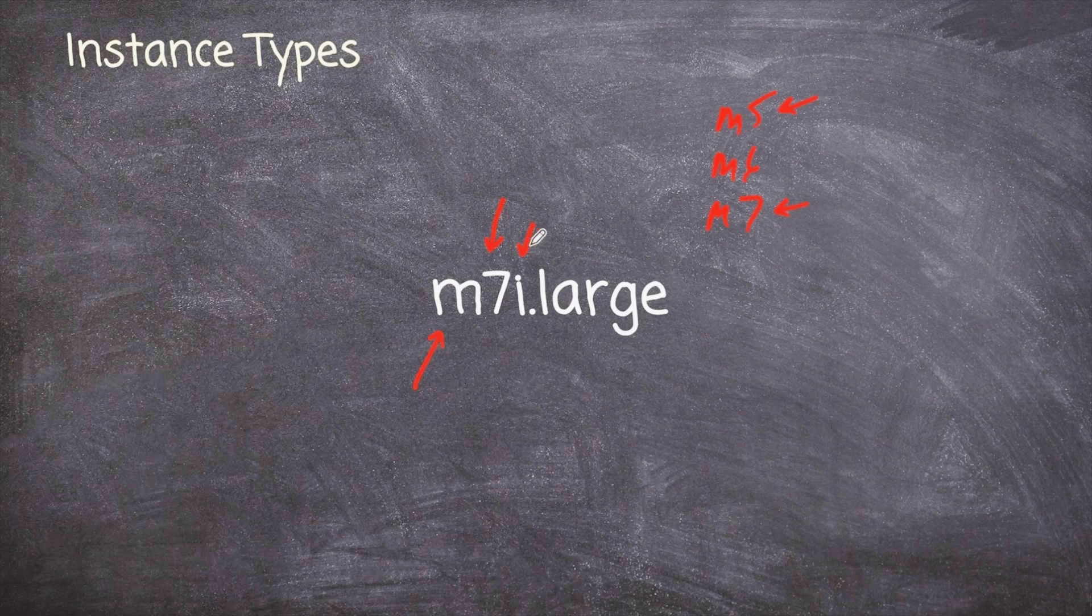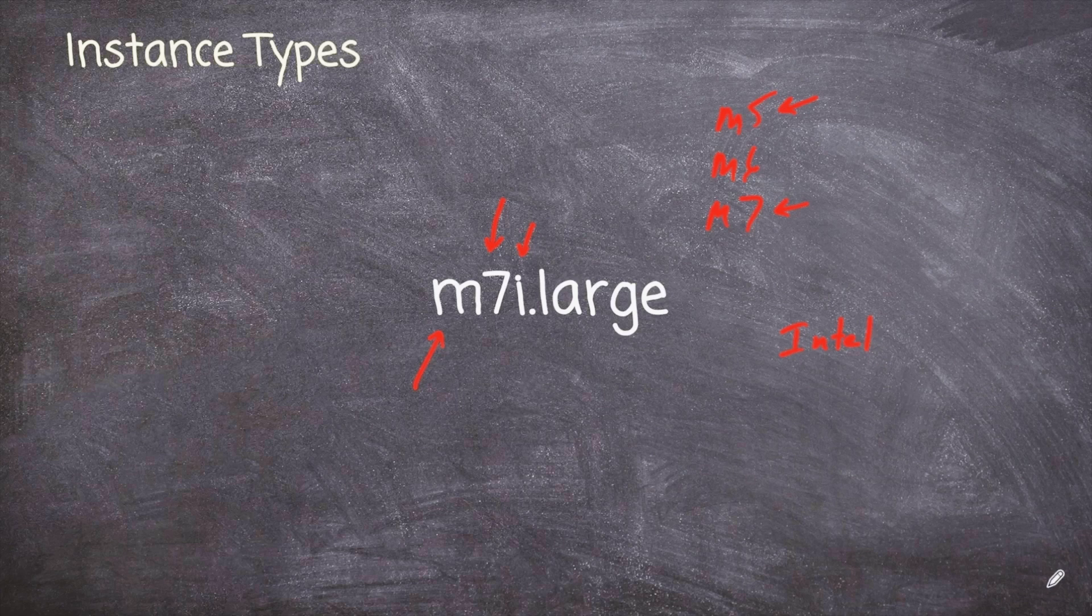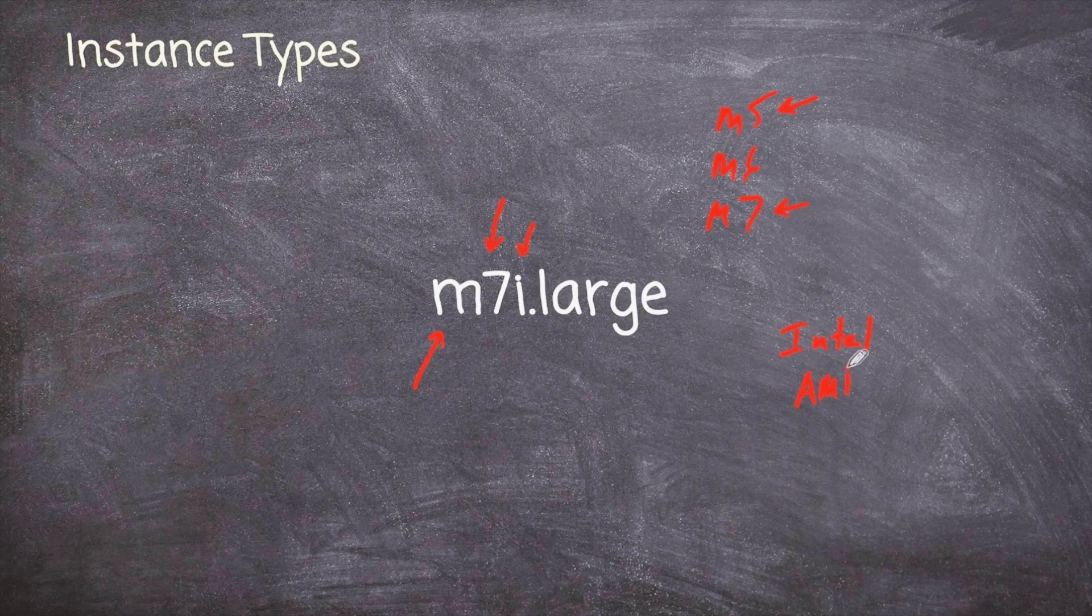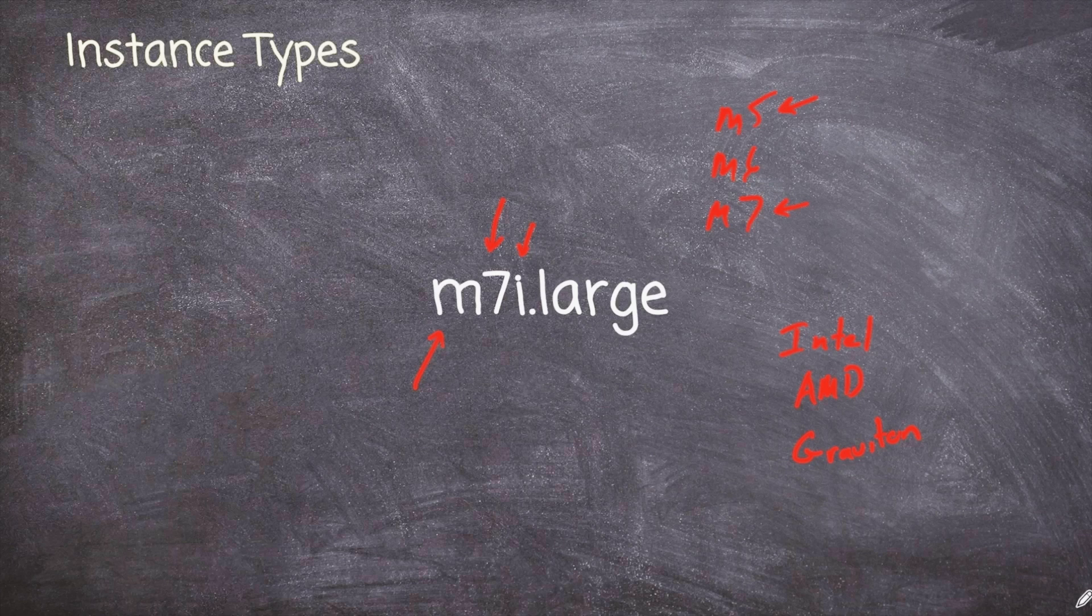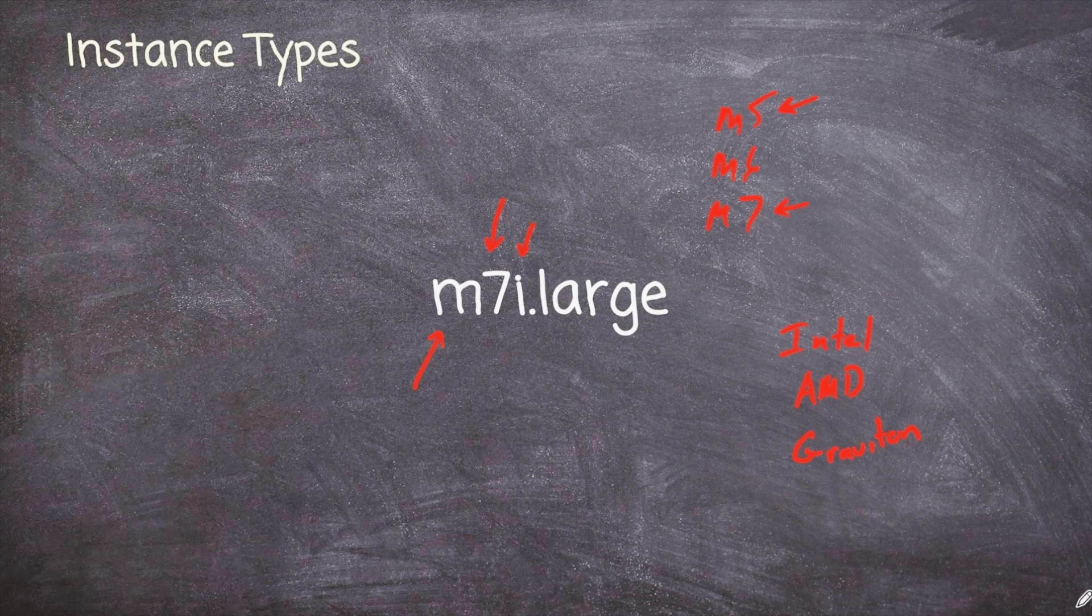Now this I here tells me that this is an Intel-based instance type, meaning Intel CPU. Now if it was an A, that would tell me it was an AMD processor. And if it was a G, that tells me that it is a Graviton processor. Now what is a Graviton processor? Well, AWS has invested in building their own CPUs, their own computer processors. And one of their CPUs they call a Graviton. Now it is an ARM-based processor.